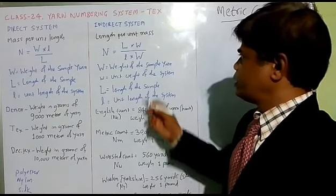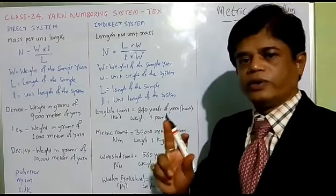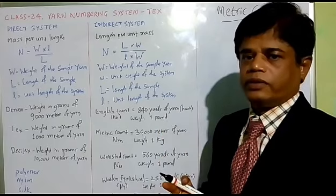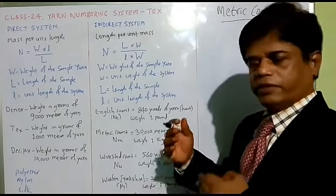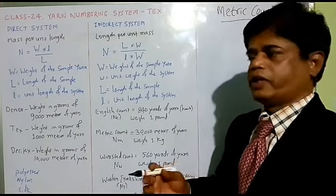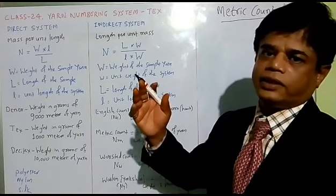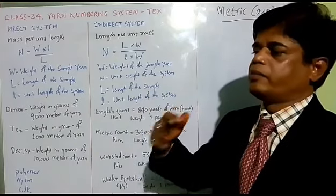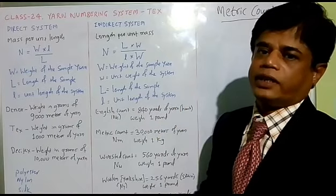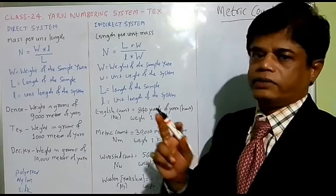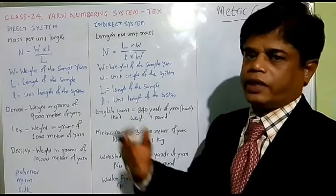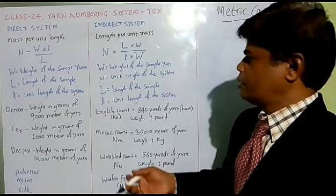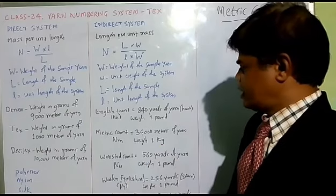In English count, indirect system, one pound - that is 454 grams - is fixed. Whatever the number of length, that is multiple of 840 yards. One 840 yards weighing one pound is one count. Multiple of 840 yards weighing one pound gives you the count.